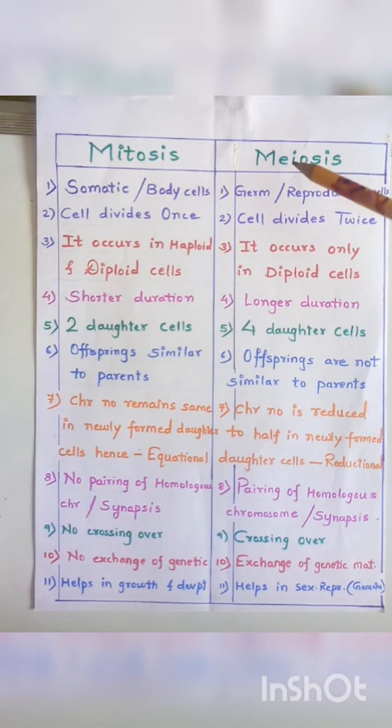Meiosis requires more time, so the duration of meiosis is longer. At the end of mitosis, two daughter cells are formed, whereas at the end of meiosis, four daughter cells are formed. This is the most important feature to remember about mitosis and meiosis.